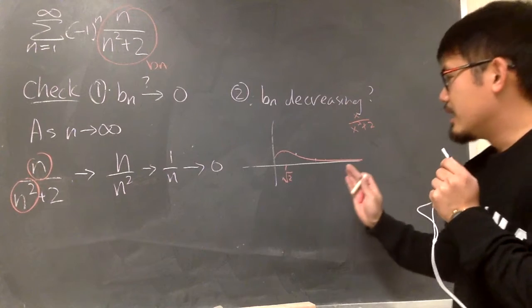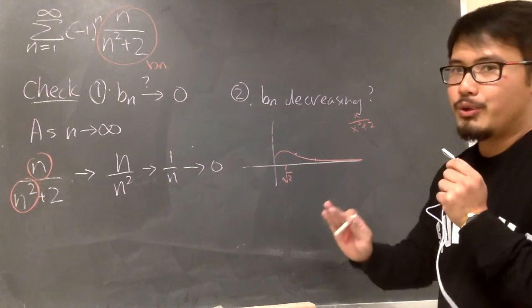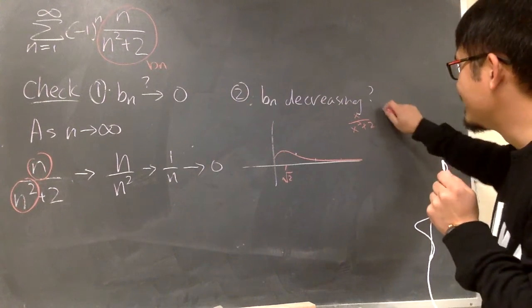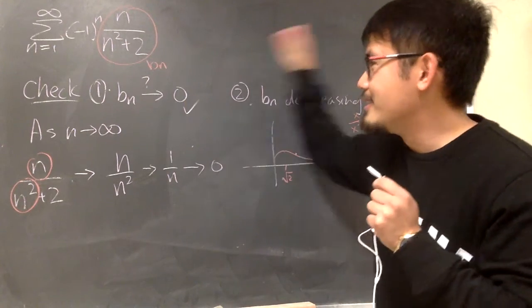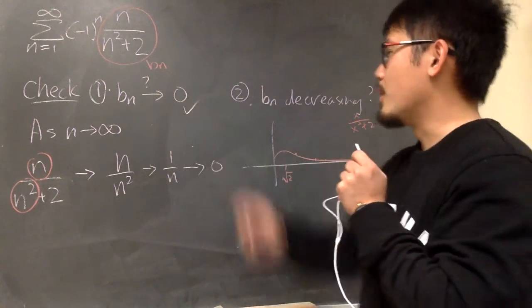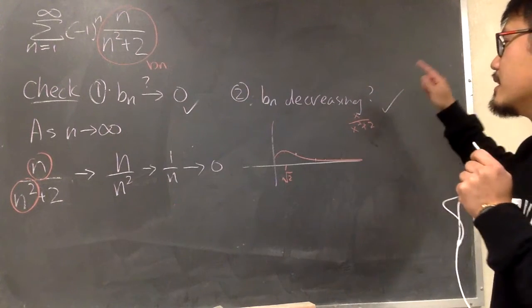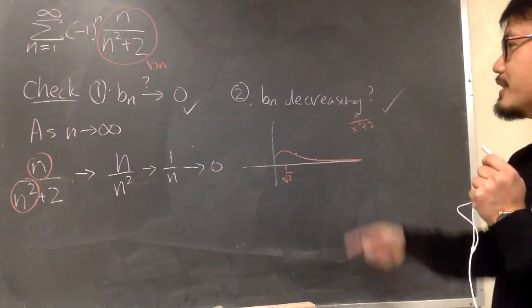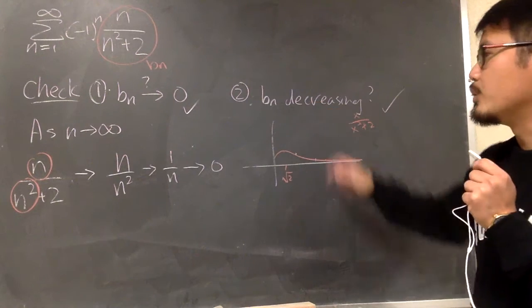bn is decreasing because this function is also decreasing after you have the x value square root of 2. Decreasing. As long as you show me the graph, you are okay. So this part checks. Earlier part checks. Two things: bn approaches 0 and then the second thing is bn decreasing. These are the two things and we just did.